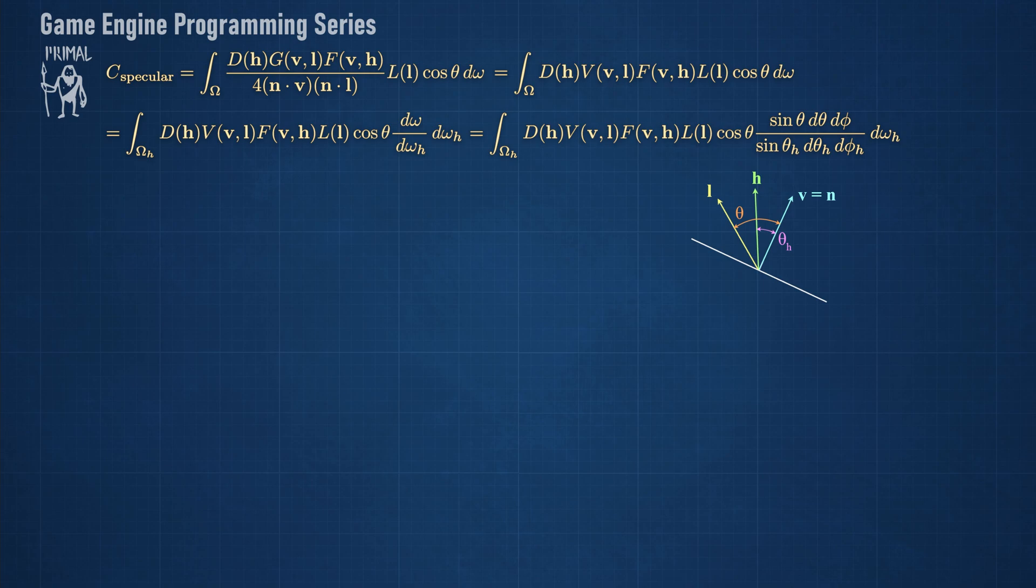Obviously the orientation of the view vector has no consequence for the angle phi, so phi and phi_h are the same.